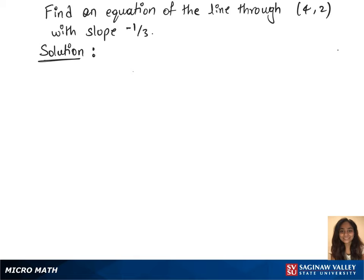To find an equation of the line through the point (4, 2) with slope -1/3, we'll first use the line formula which is y = mx + b. We have the point (4, 2).